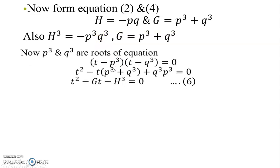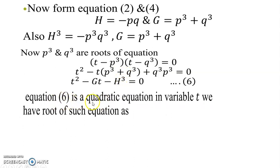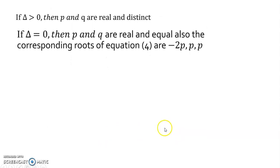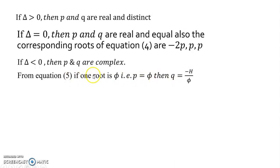We form the quadratic equation t² - gt - h³ = 0 in variable t, whose roots are p³ and q³. Solving gives t = (g ± √Δ)/2, where Δ = g² + 4h³. If Δ > 0, p and q are real and distinct. If Δ = 0, p and q are real and equal. If Δ < 0, p and q are complex.